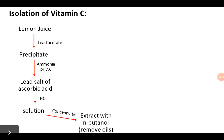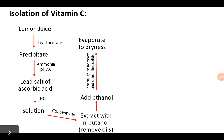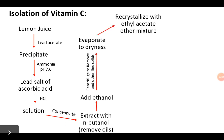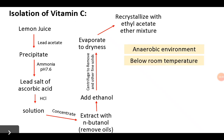The solution is concentrated and extracted with an organic solvent like n-butanol to remove the volatile or essential oils still present from lemon juice. Ethyl alcohol is then added to precipitate ascorbic acid as a fine powder. Centrifugation is performed, the pellet is collected, evaporated to dryness, and recrystallized with an ethyl acetate-ether mixture.